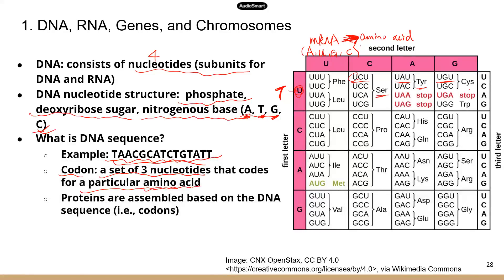Once we have the sequence of amino acids based on the DNA sequence, the cell will put all the amino acids in the correct order. Amino acids are the building blocks for proteins. Proteins are normally multiple chains of amino acids — sometimes one chain, but most of the time a cell will make multiple chains of amino acids and then put them together as a functional protein.